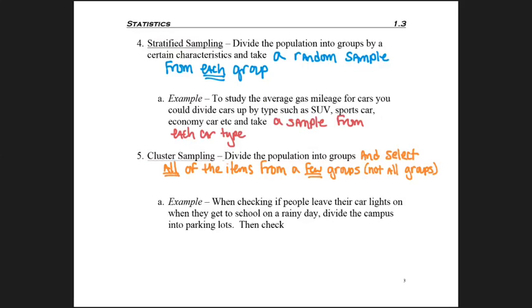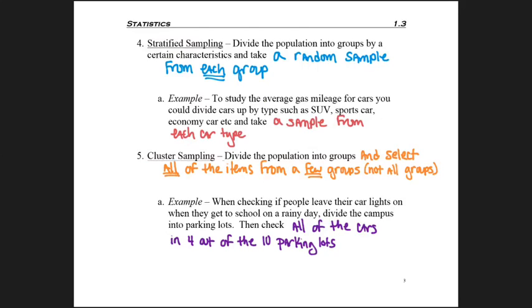Consider this example: if you were checking if people left their car lights on when they drive to school on a rainy day, what you could do is divide the campus into parking lots. That's your division, and then what you would do is check all of the cars in four of the ten parking lots.